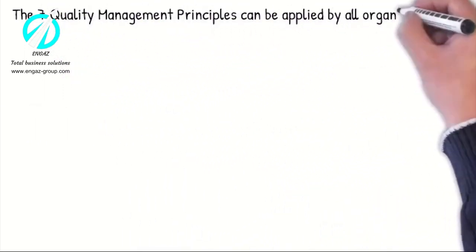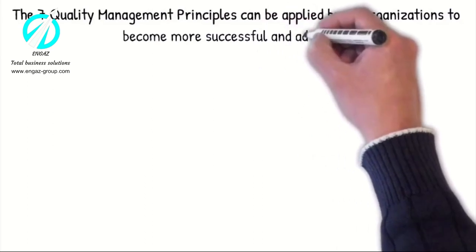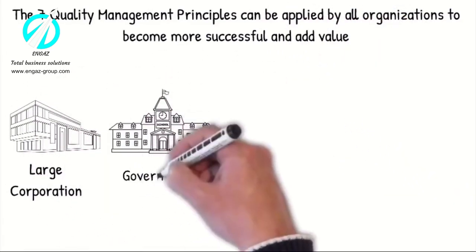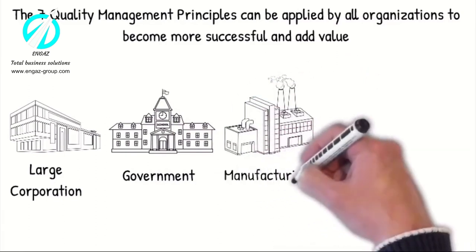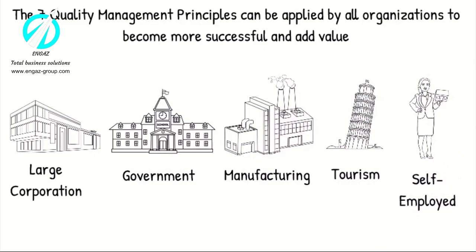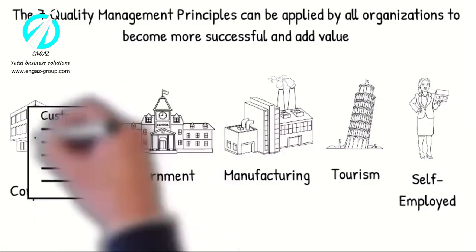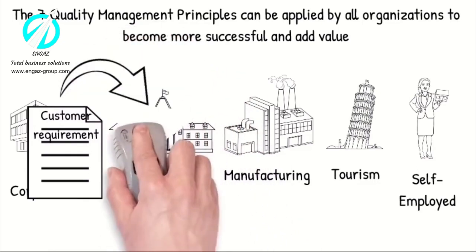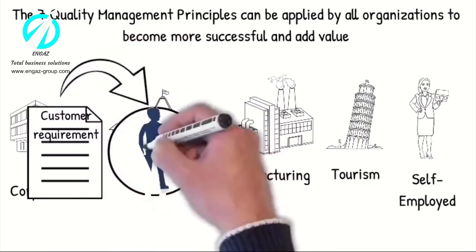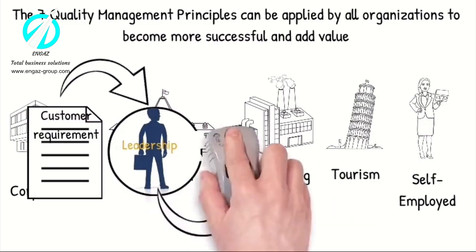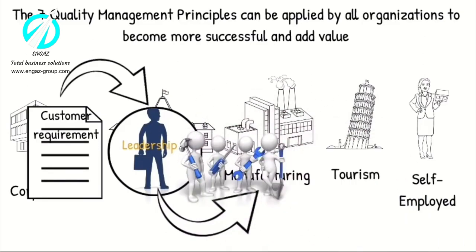To summarize, the seven quality management principles can be applied by all organizations to become more successful and add value — from major corporations to government organizations, to all manufacturing, even tourism, and especially if you are self-employed. The organization will ensure that they have the capability to meet the customer requirements before they accept the contract. Customer requirements will be included in the company objectives, designed into the manufacturing processes, and communicated to all employees.